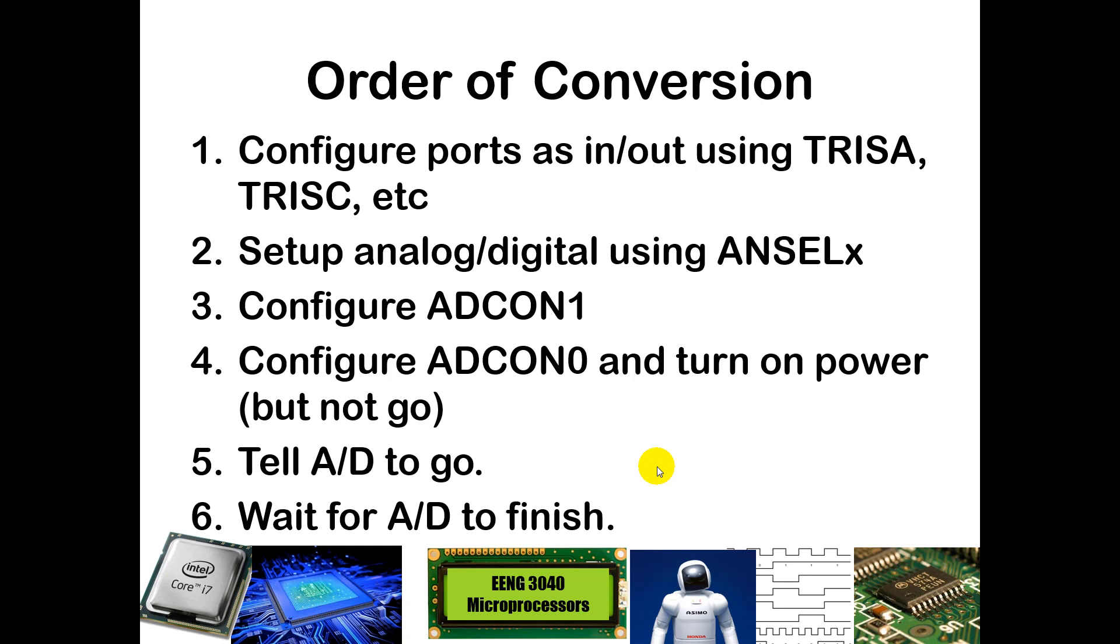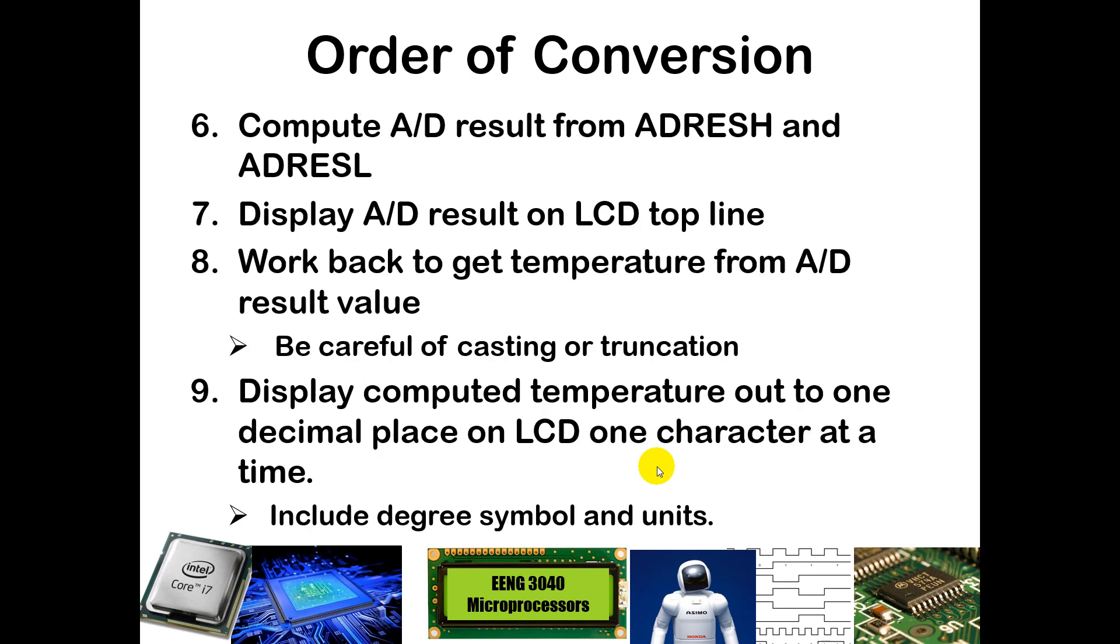Then you're going to set the go bit. You're going to wait for the A to D to finish, and you can either use an interrupt or you can use polling. Then we're going to compute the A to D result just as we had before using the A to D results registers, the ADRESH, ADRESL. Then we're going to display the A to D results on the top line. We're going to compute the temperature using the formula that you'll derive. Be careful when you use that to use appropriate casting or truncation. Then display the temperature out to two decimal places on the LCD on the second line. Be sure to include the degree symbol and units.